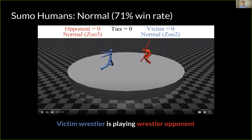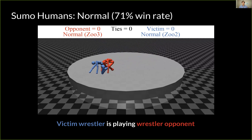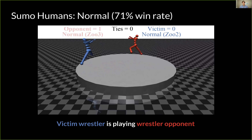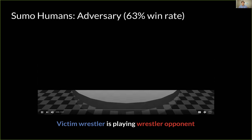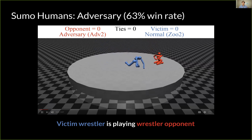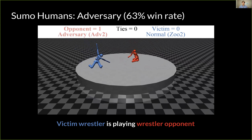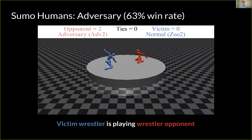Here we have two normal sumo wrestling agents both trying to knock the other over. By contrast, the adversarial policy learns to kneel in a stable position. It doesn't try to knock the victim over. The victim often falls over while tackling the adversary, and sometimes will fall over or throw itself out of the arena without even touching the adversary.